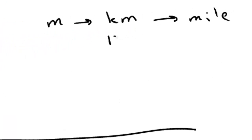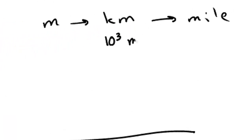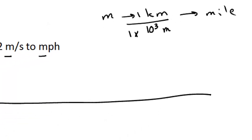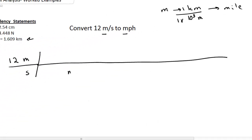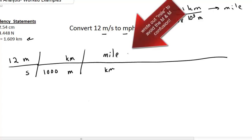Remember, kilometers stands for 10 to the third meters. So 1 kilometer equals 1 times 10 to the third meters, so I can put meters here — 10 to the third, or 1,000 — and put kilometers up here. Then I'm going to go from kilometers to miles, and that will take care of my distance units.